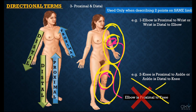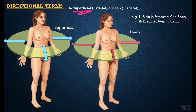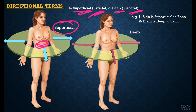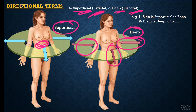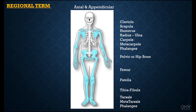Next we have the terms superficial and deep. Superficial is also called parietal, and deep is also called visceral. Parts of the body present towards the body surface are called superficial, and parts present inside the body surface are called deep. For example, the skin is superficial to the bone, and the brain is deep to the skull.